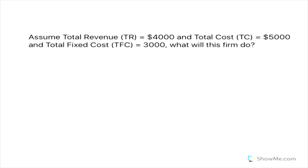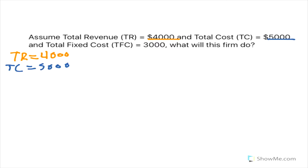Now let's take a look at example number three. Assume that another business approaches us and asks if they should stay or shut down. They've given us their total revenue, which is $4,000, so TR equals $4,000. They've given us a total cost of $5,000, and a total fixed cost of $3,000.